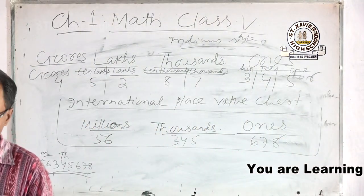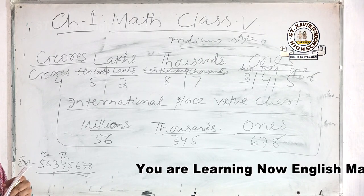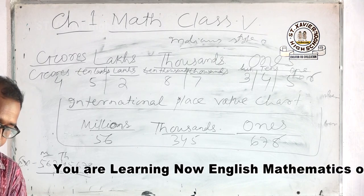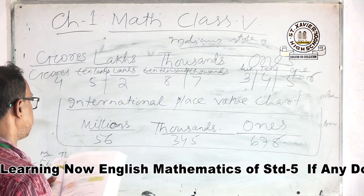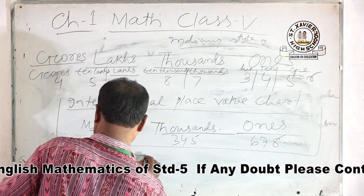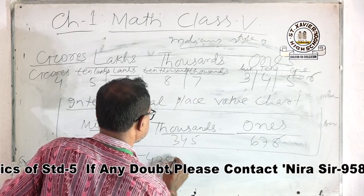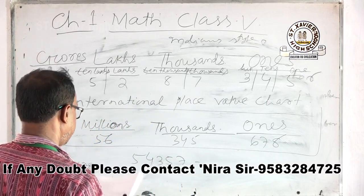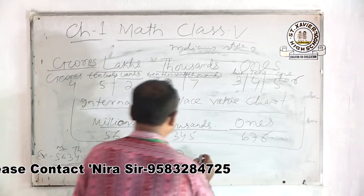Now we have to write the place value and number names. Here is an example: 5,43,57 — you have to write the number names, for example, 54 thousand 357. You have to write it out slowly and complete the place value.